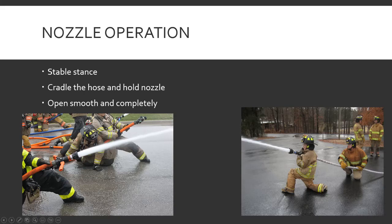Nozzle operation — key points: you want a nice stable stance, because depending on if you've got 100 PSI coming out, you've got 100 PSI fighting you. Securely cradle the hose and hold the nozzle, and open fire nozzles smooth to prevent water hammer — and completely. Fire nozzles have detent positions so you can click them open partway, but doing that creates turbulence and restricts water flow, giving you a poor stream. With fire nozzles: open or closed.